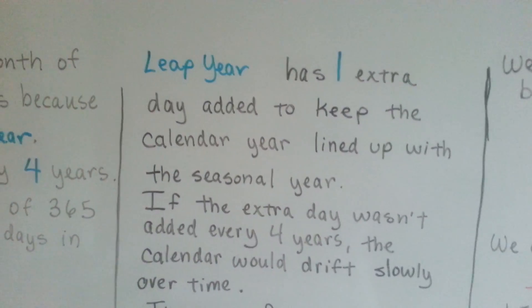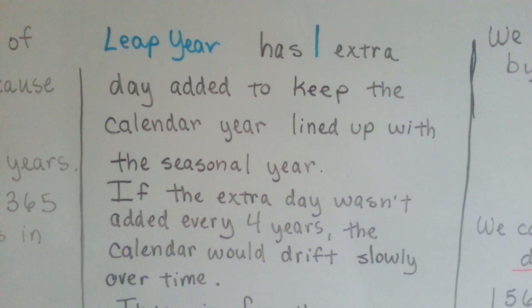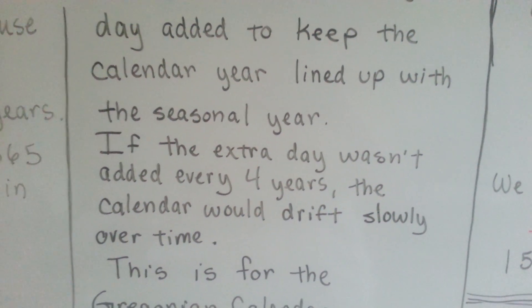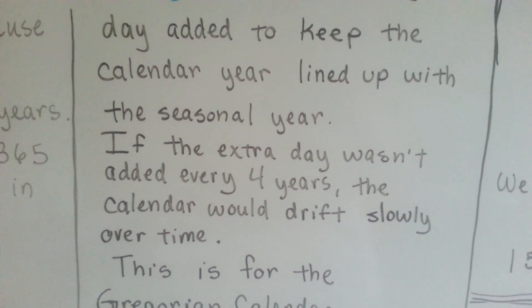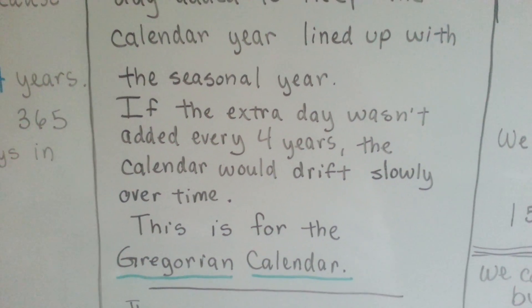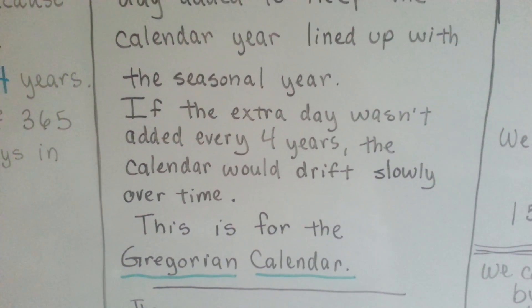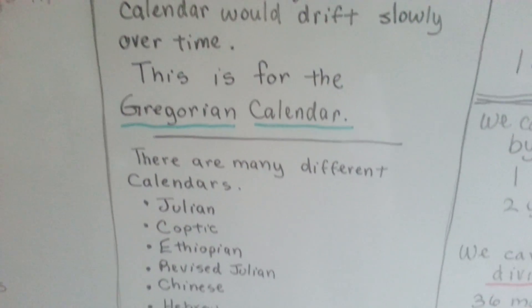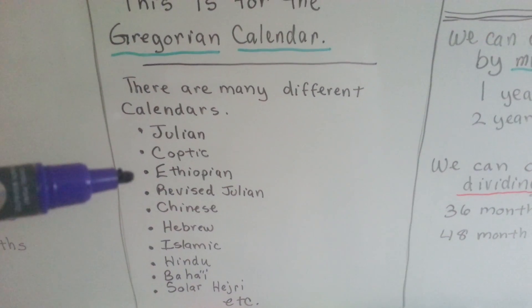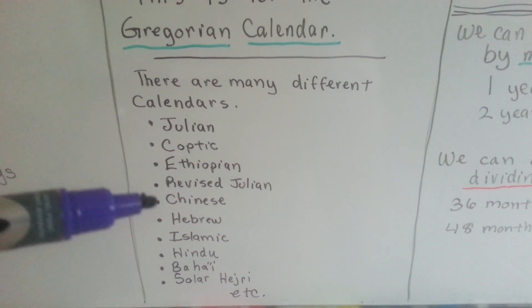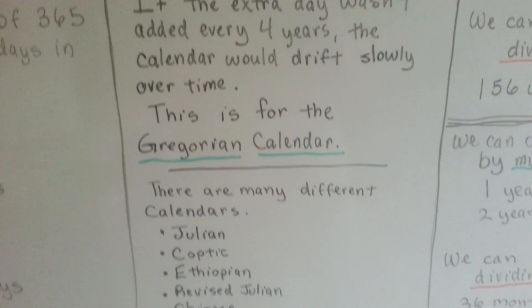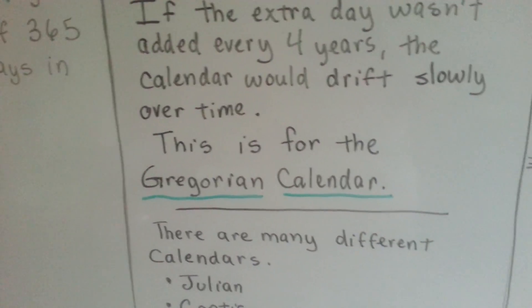Leap year has one extra day added to keep the calendar year lined up with the seasonal year. If the extra day wasn't added every four years, the calendar would slowly drift over time. This is for what's called the Gregorian calendar. There are many other types of calendars — the Julian, the Coptic, the Ethiopian, the Revised Julian — but we use the Gregorian calendar.